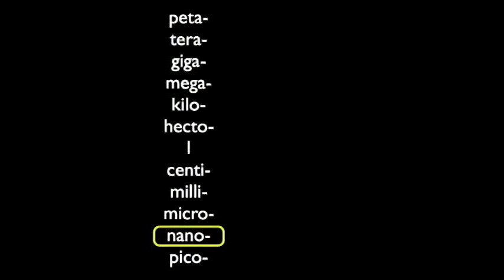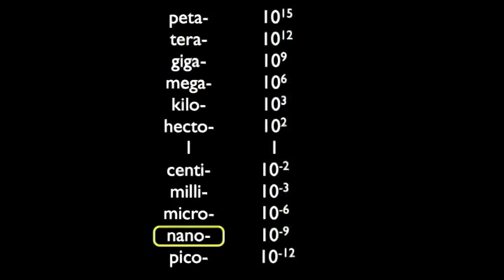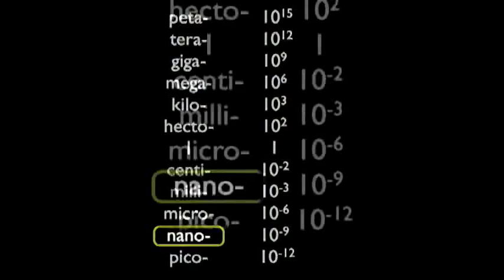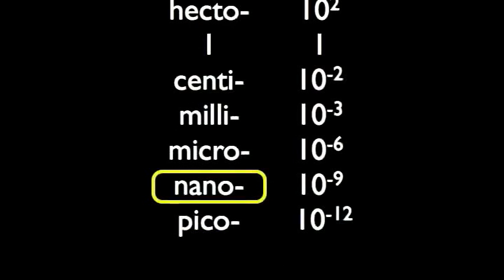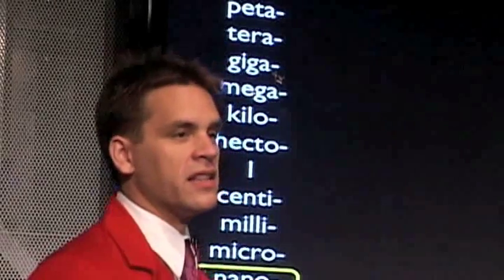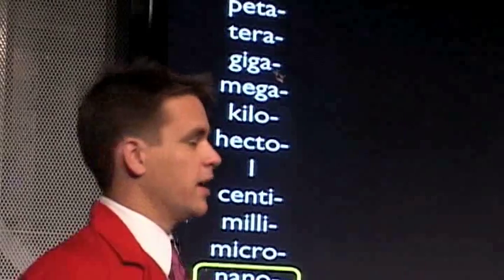There are a whole host of them, and shown here are their multiplication or division values on the right-hand side. Nano is just the one down here — ten to the minus ninth. So a nano-something is ten to the minus ninth of that thing, a billionth of that unit.